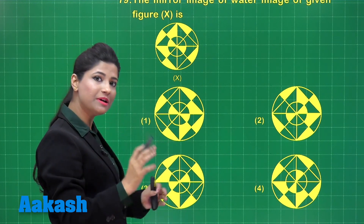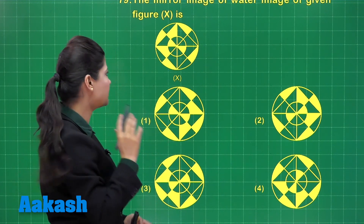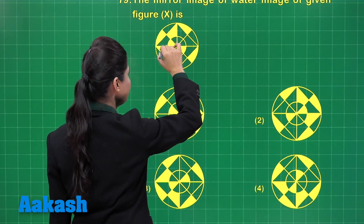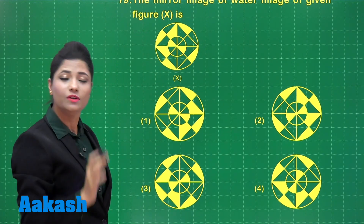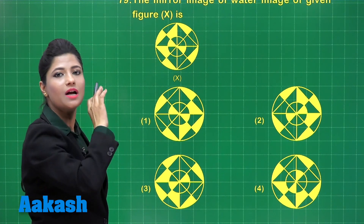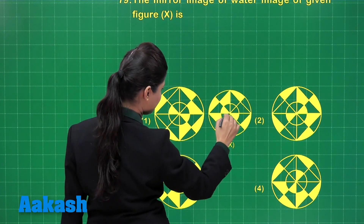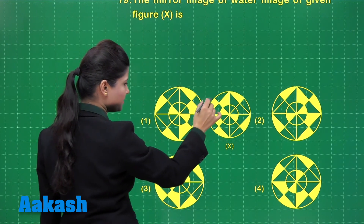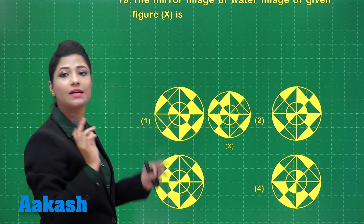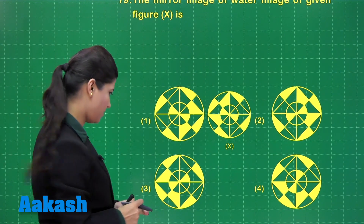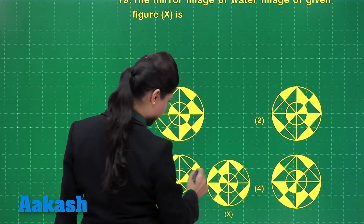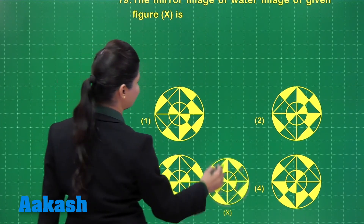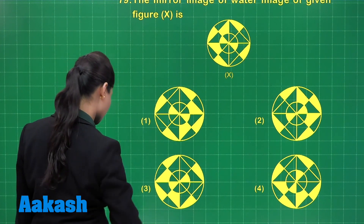Now let us come to the mirror image. In mirror image, left becomes right and right becomes left. In the current figure, one portion is filled and another is unfilled on the left side. When you take its mirror image, the filled portion will come on the right. Comparing with option 1, you can clearly see this is the mirror image — one portion is filled, one other is not filled, looking alternate because this is the mirror image of the water image. In option 3, left is not becoming right, so that is eliminated. This is the clear answer: option number 1.